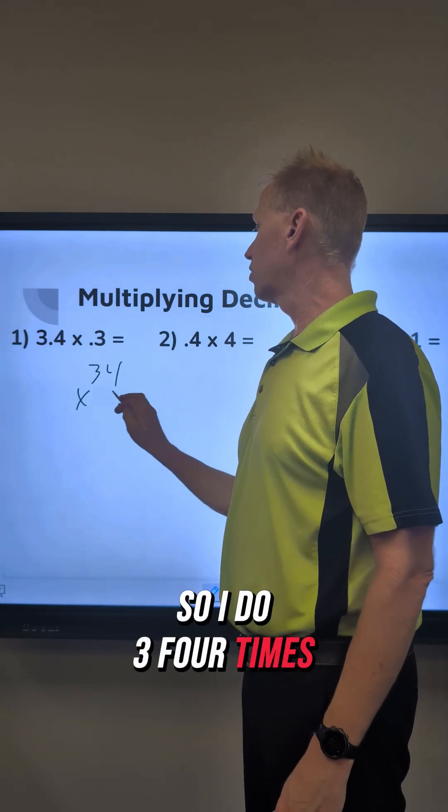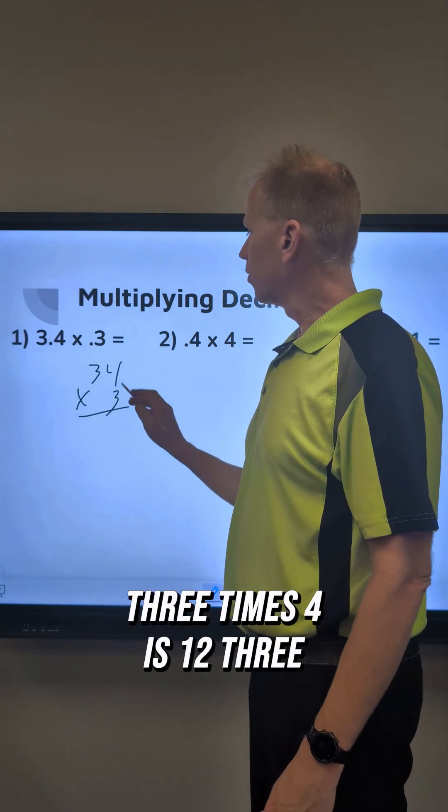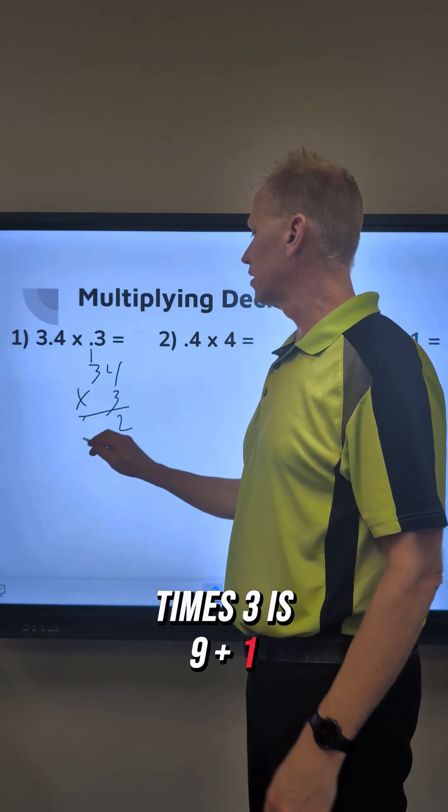So I do 3.4 times 3. I don't worry about the decimal. 3 times 4 is 12. 3 times 3 is 9 plus 1 is 10.